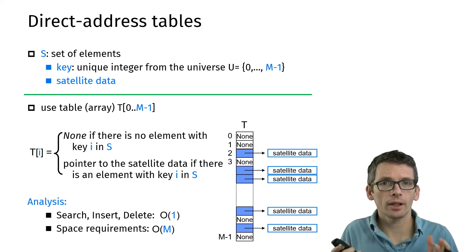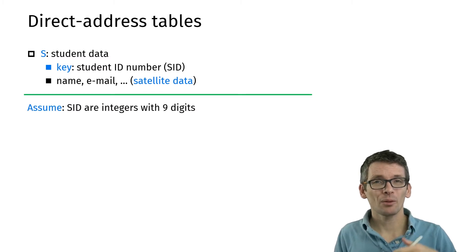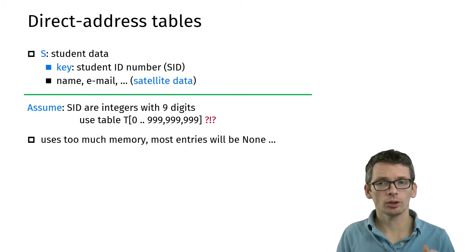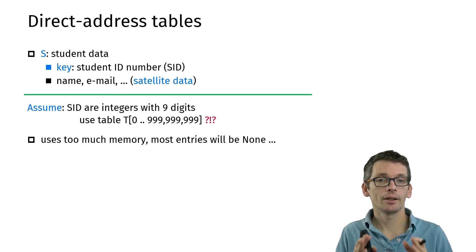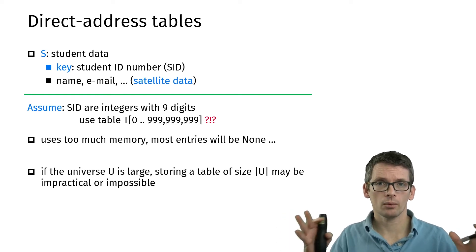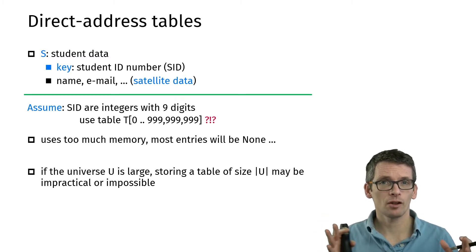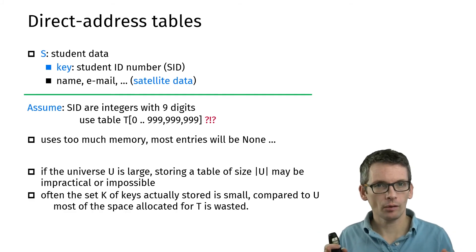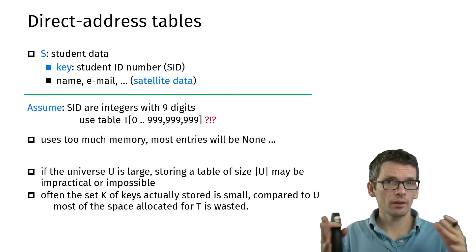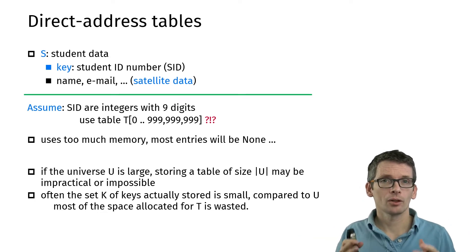Now why is that a problem? Let's again go back to the example of student IDs. Let's say the student IDs are nine-digit numbers. That means we're going to make a table of that size. We're going to use lots of memory, and most of that memory will actually be just storing none. If the universe is much larger than the entries we're actually planning to store, then a direct address table is very inefficient in terms of space usage. Very often the set of keys will be much smaller than the universe. Often enough we don't really have a restriction on the universe, so we might allow all integer numbers, which would be too large to store.